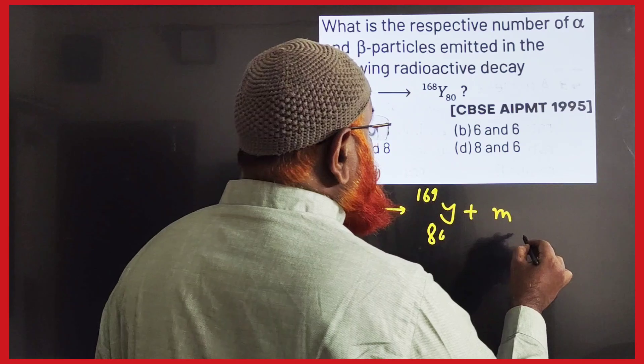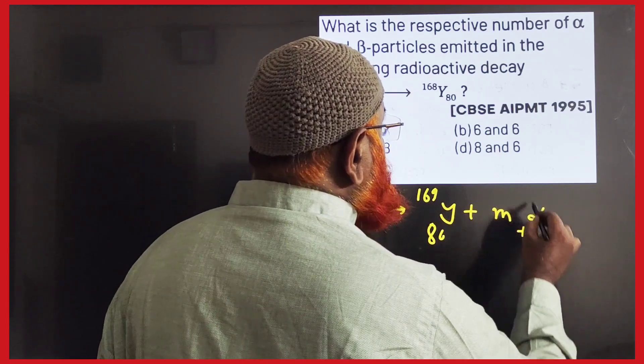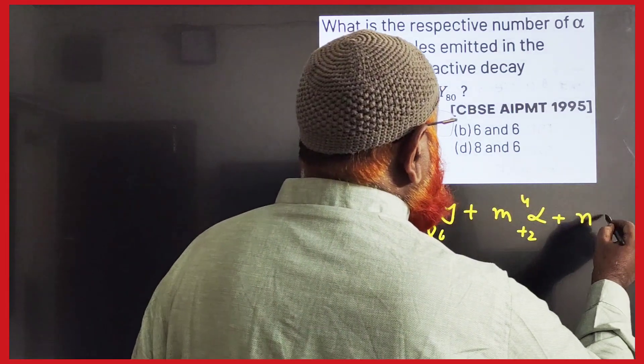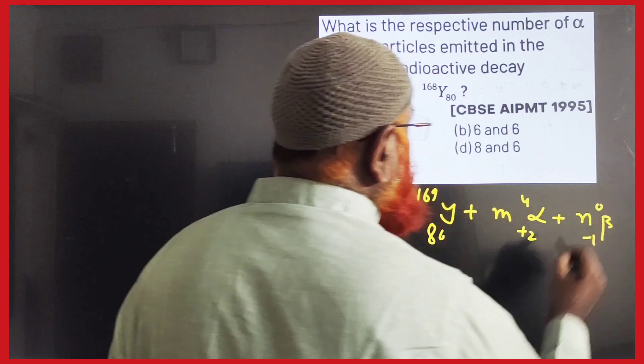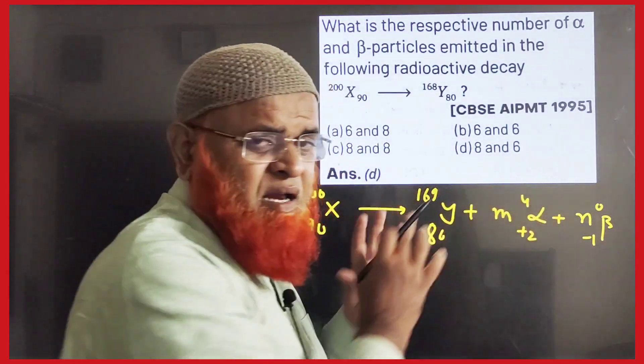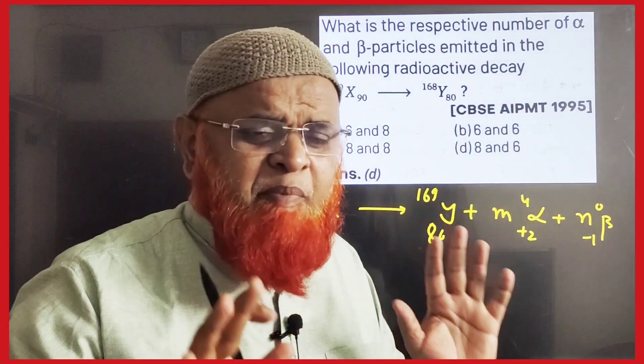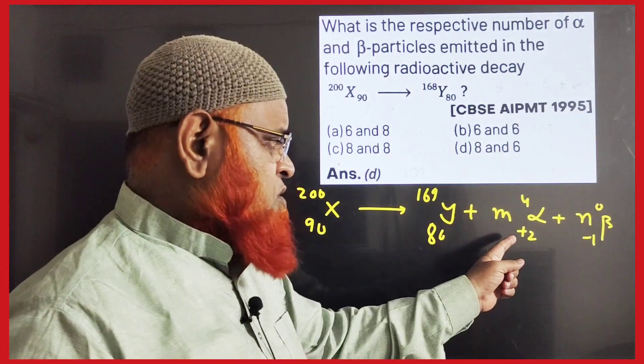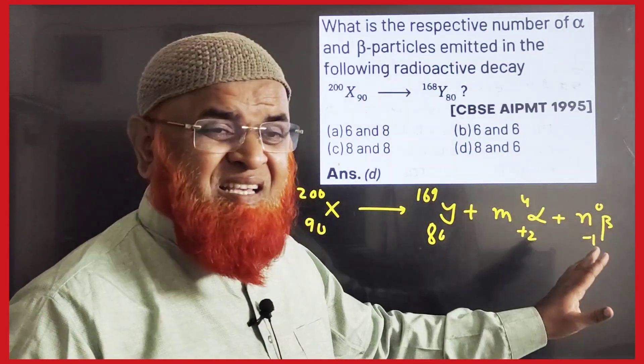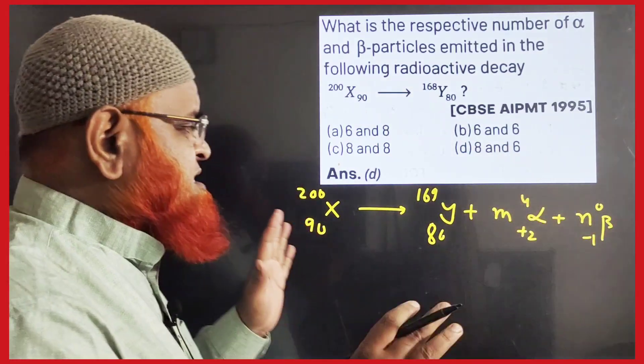how many alphas? M alpha particles with charge +2 and mass 4, plus N beta particles with charge -1 and mass 0. So let us say M alphas are released and N betas are released. We don't know how many, but you know the alpha is +2, 4 and beta is -1, 0. It's very simple now.